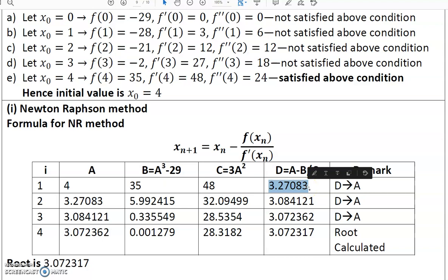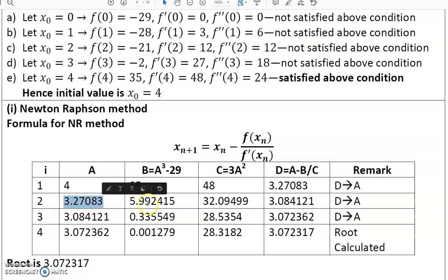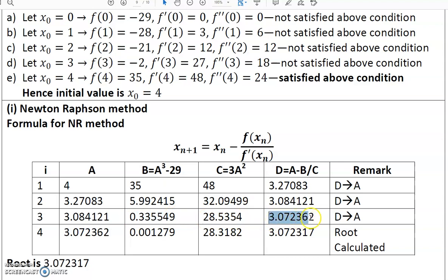With a = 4: b = 4³ - 29 = 35, c = 3 × 4² = 48, so d = 4 - 35/48 = 3.27083. This new root is copied to a for the next iteration. With a = 3.27083: calculating b and c gives d = 3.08412. This d is again replaced into a for the next iteration.